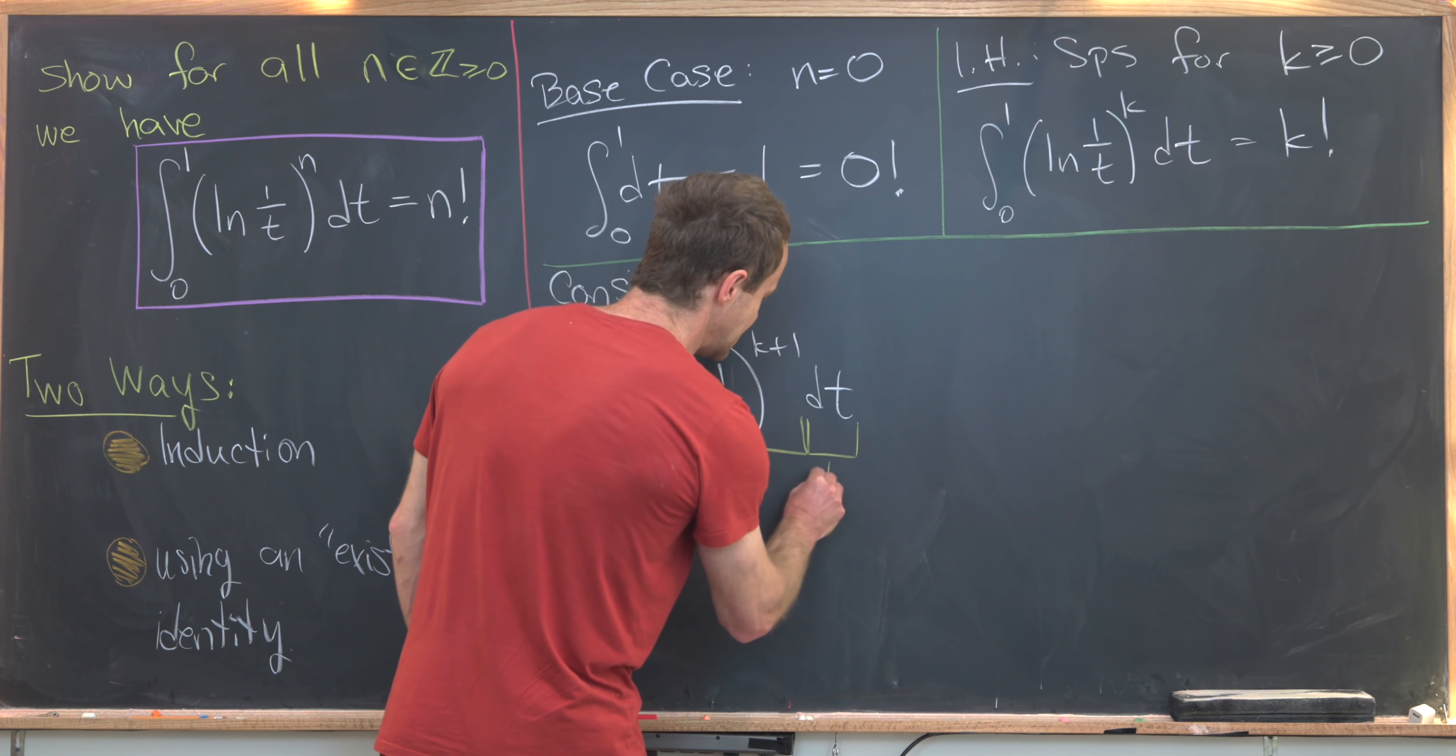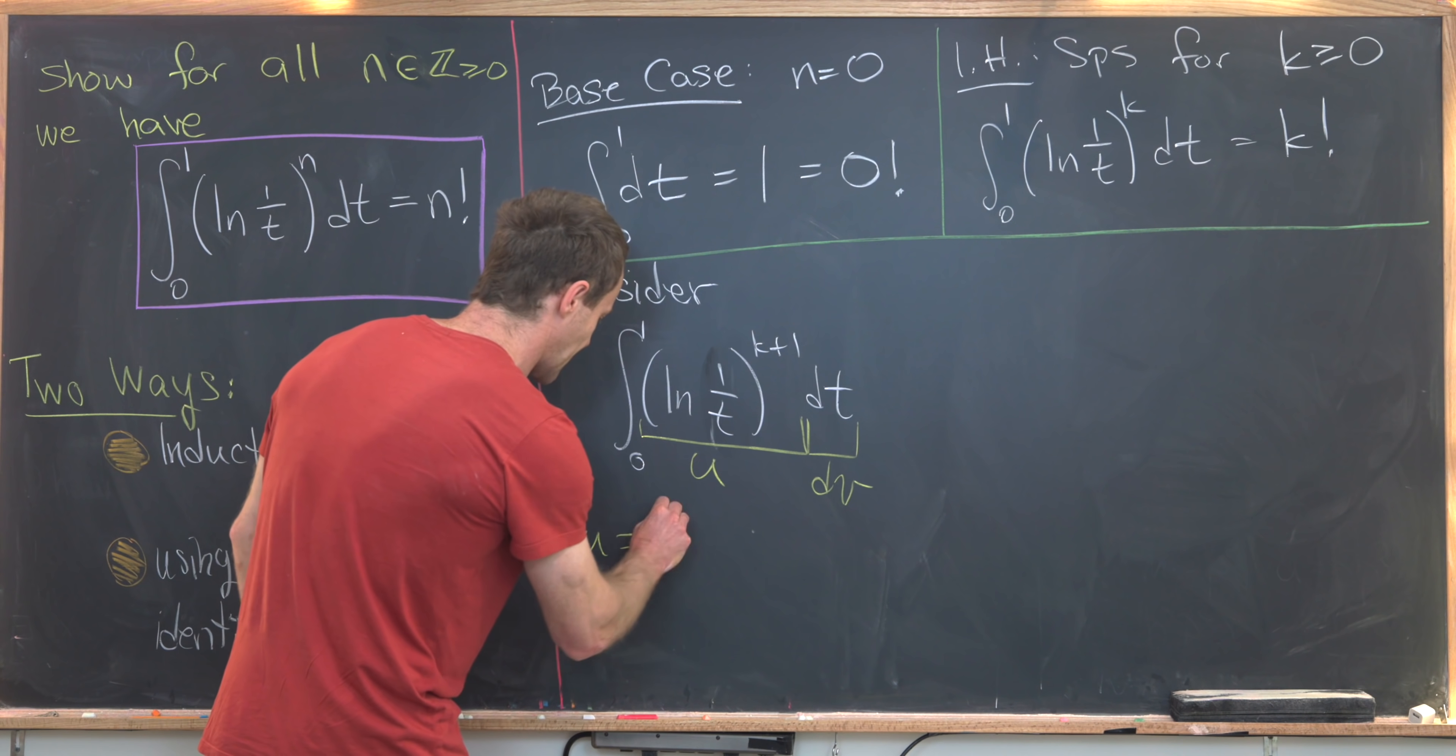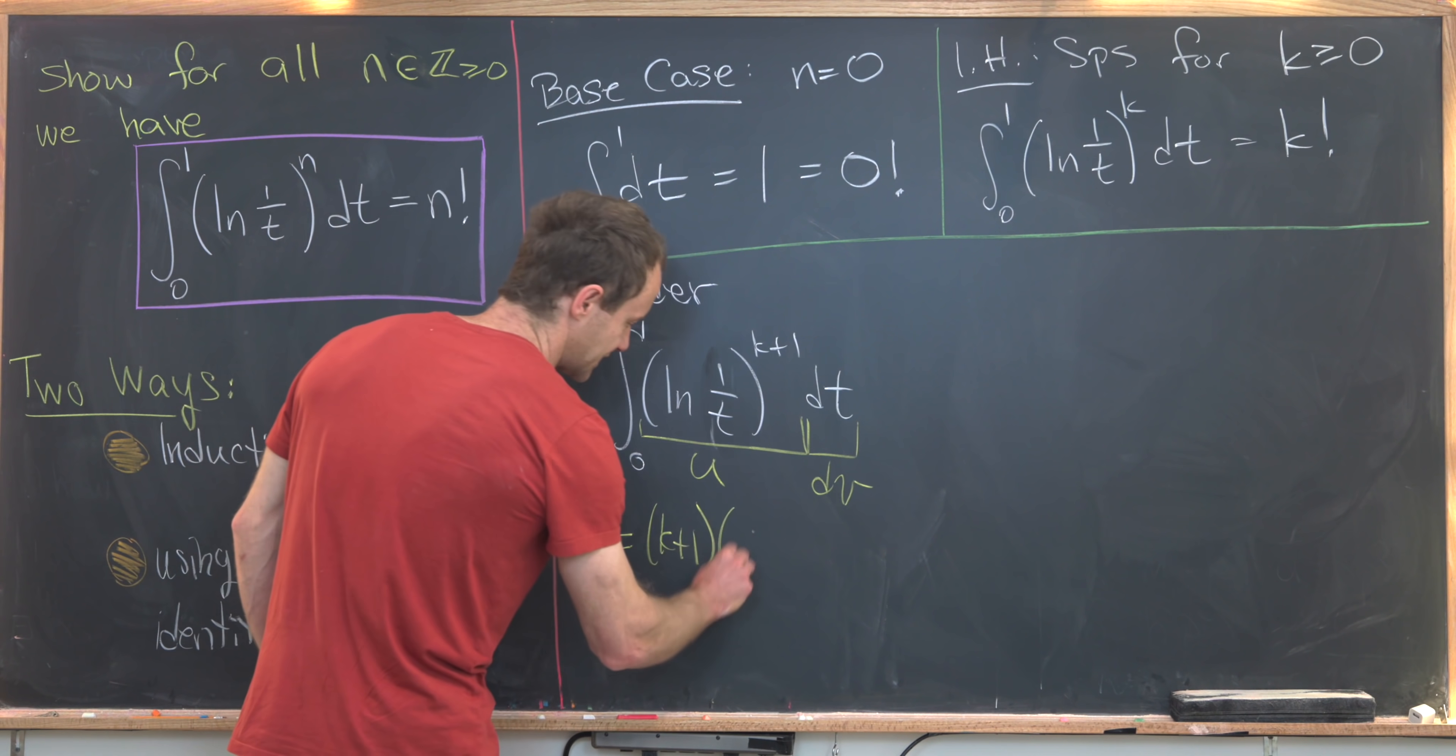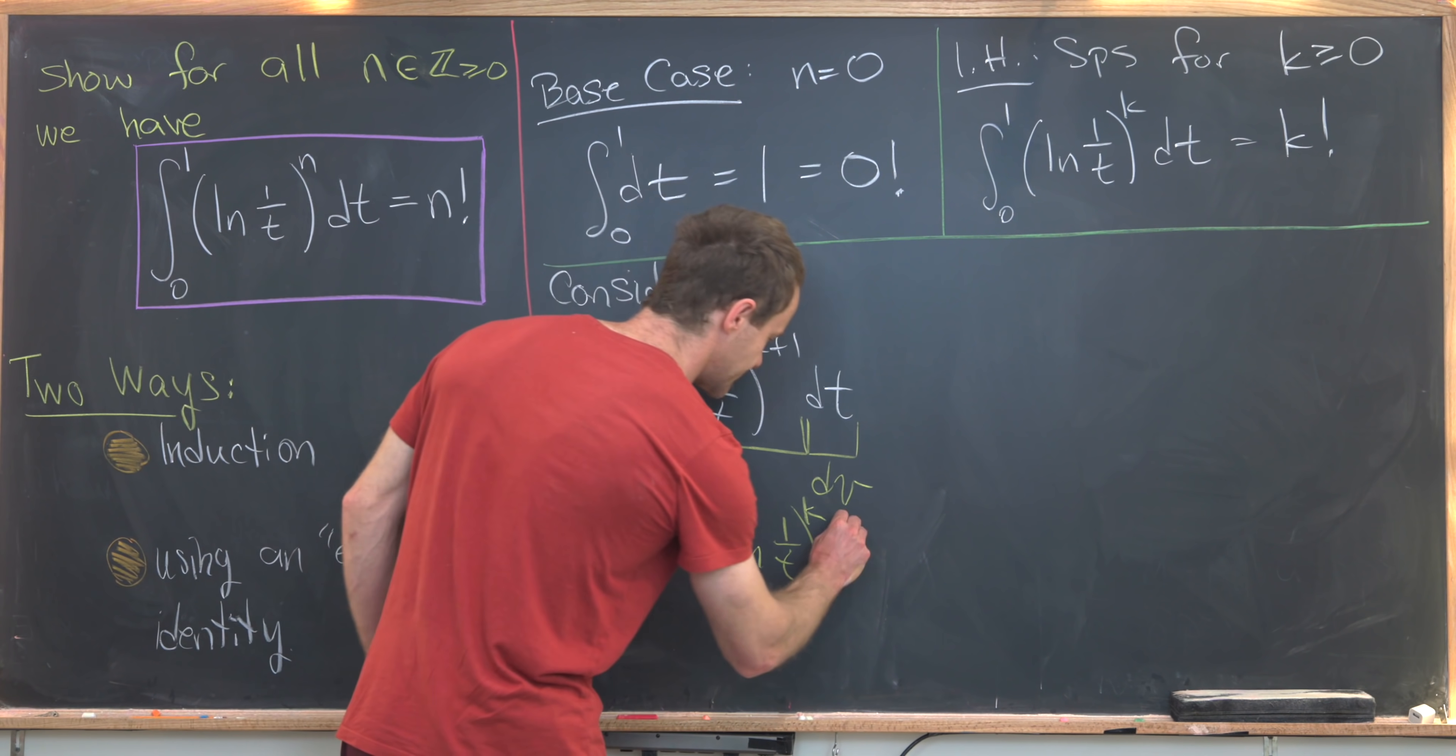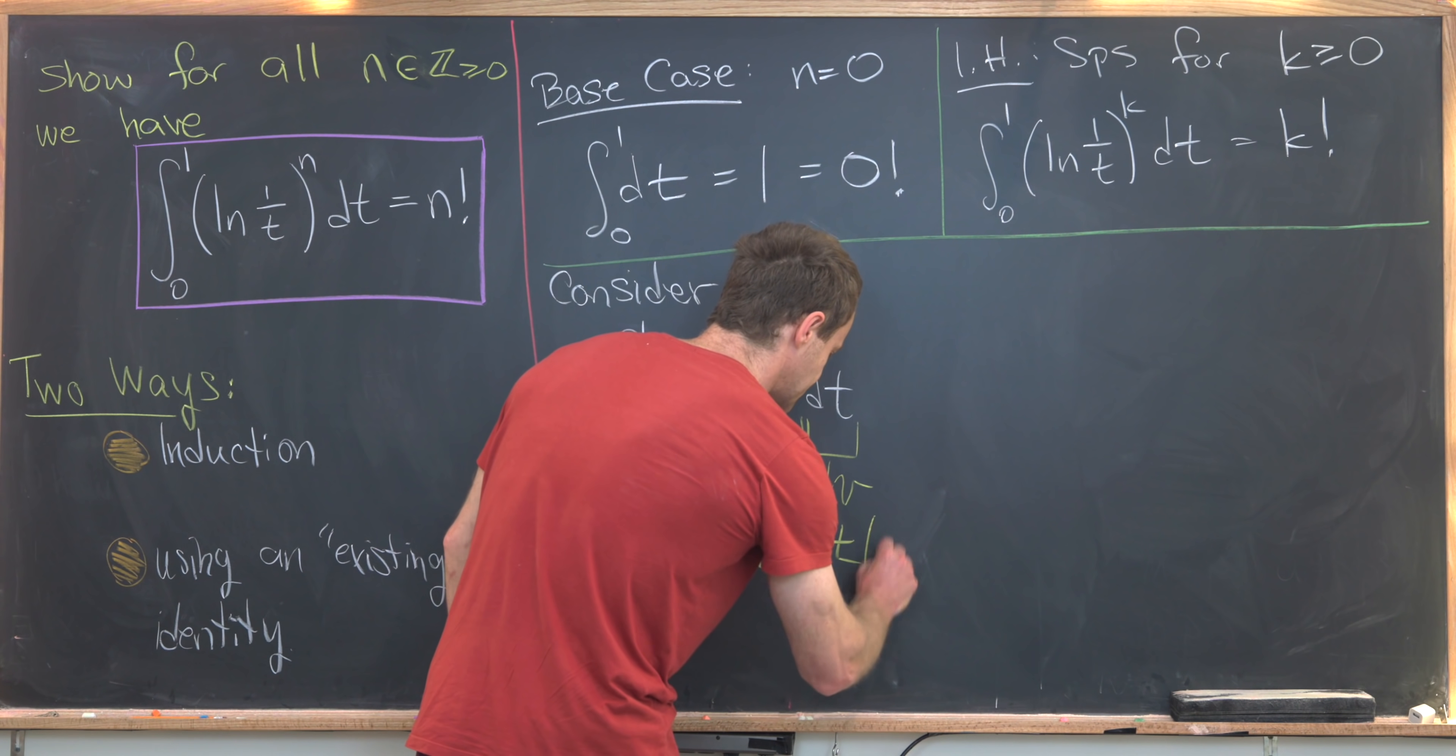Then we will let dv be all of the rest. That means that du, that's going to be the derivative of this stuff. So we've got a couple of applications of the chain rule to use here. We've got this outermost function, which is something to the k plus 1. So that'll give us k plus 1 natural log of 1 over t to the k. Then we have to take the derivative of natural log. That will invert this 1 over t to t over 1, so I'll just write that as t. And then finally, we have to take the derivative of the innermost function, which is 1 over t. That'll give us minus 1 over t squared dt.